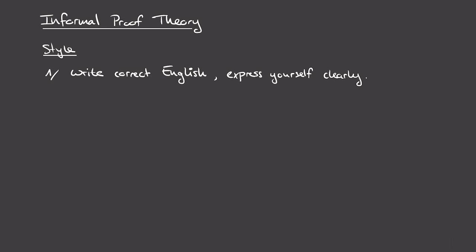Hence it's important when writing your own proofs to always keep the reader in mind. Even if no one besides yourself will ever read the proof, it's still a good idea to follow these style guidelines so you can understand your own thoughts more clearly. The first point is to write correct English and express yourself clearly.